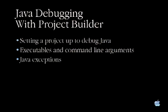You actually just saw most of the debugging features in the Java debugger in Project Builder 2, because they are the same — the user interface is shared between the two. I'm going to go through just some differences, some things you have to do differently when debugging in Java. The three things I'll show are: setting up a project to debug in Java, setting up the application and its command line arguments, and a bit about Java exceptions. Java has a nice exception model where every exception must be a subclass of java.lang.Throwable.